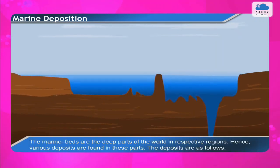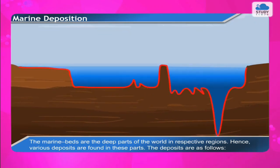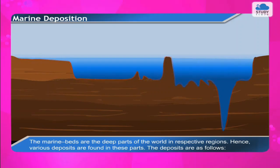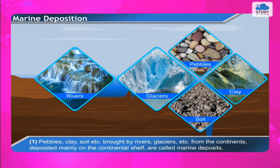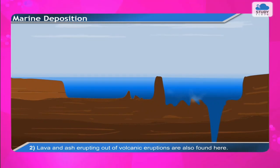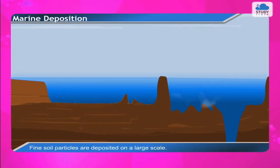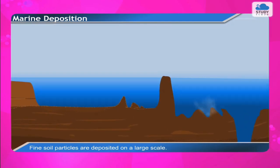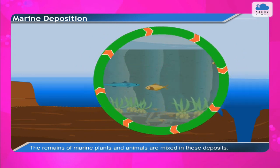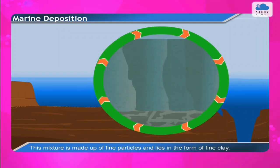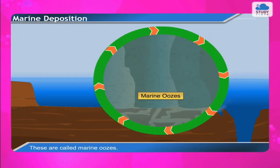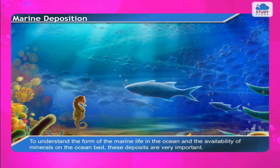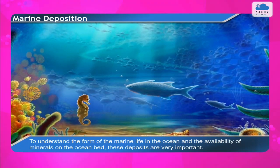The marine beds are the deep parts of the ocean where various deposits are found. These include: (1) pebbles, clay, and soil brought by rivers and glaciers from the continents, deposited mainly on the continental shelf; (2) lava and ash from volcanic eruptions, along with fine soil particles and the remains of marine plants and animals, forming fine clay deposits called marine oozes, which make up around 30% of deposits; these are important for understanding marine life and mineral availability.